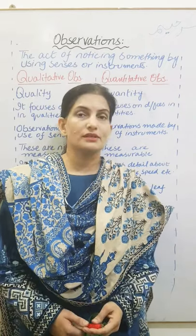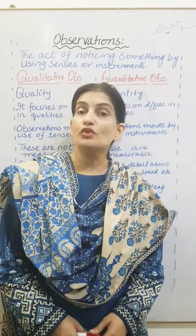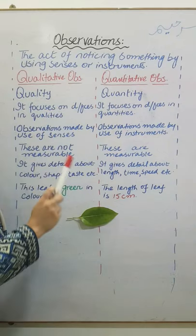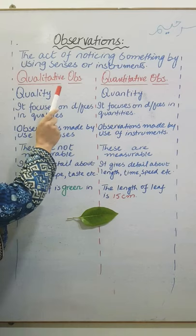One minute, one short question. Today we are going to talk about the types of observation. First of all, what is observation? This is the act of noticing something by using senses or instruments. There are two types of observation.